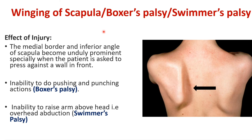This condition is known as winging of scapula, also called boxer's palsy and swimmer's palsy. The effect is that the medial border and the inferior angle of the scapula become unduly prominent and project backwards posteriorly, especially when the person is asked to push a wall in front of them. At that point, the medial border and inferior angle become so prominent that it appears as if the person has a wing attached to the back — hence the name winging of scapula.